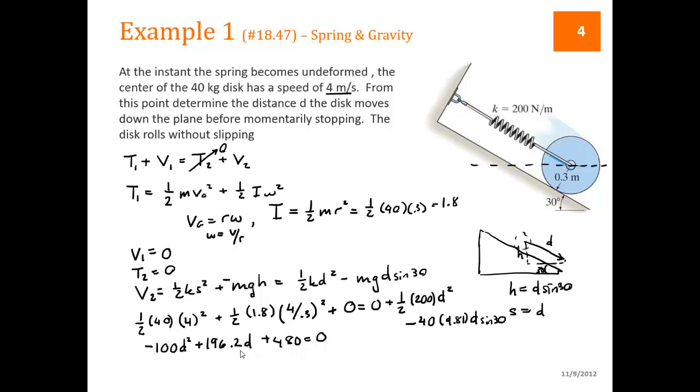Plug that into your calculator to solve the quadratic equation. You get two d's: d is either -1.42 or 3.38. Negative 1.42 would be moving up the hill. We are interested in the one that moves us down the hill. And so our answer is 3.38 meters.